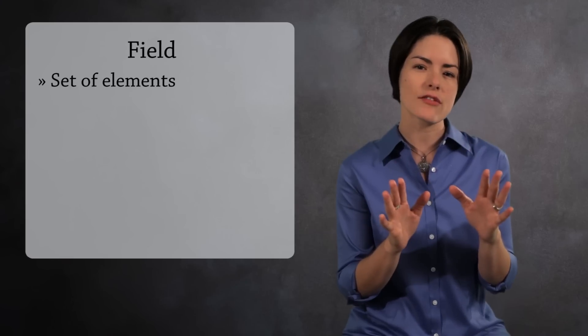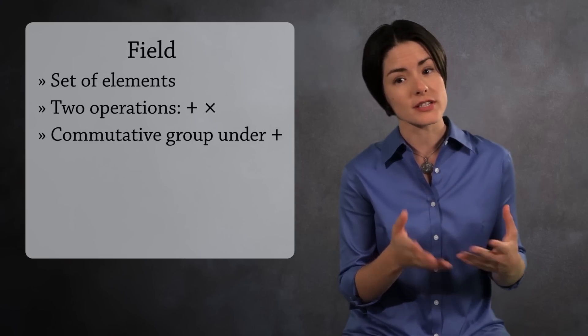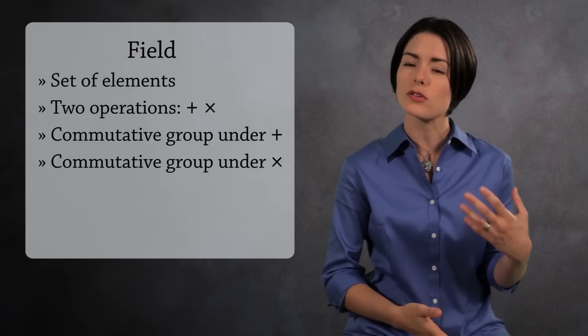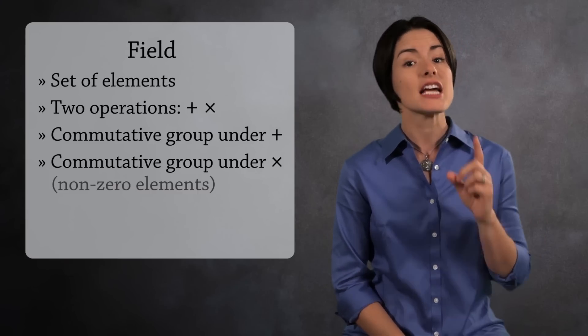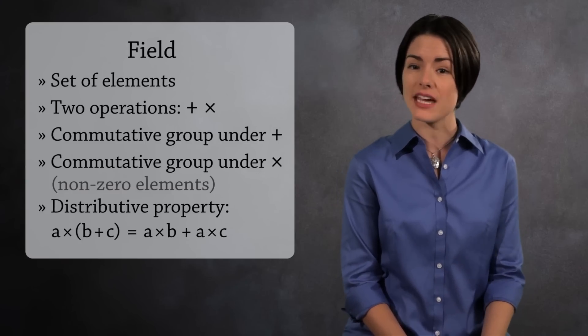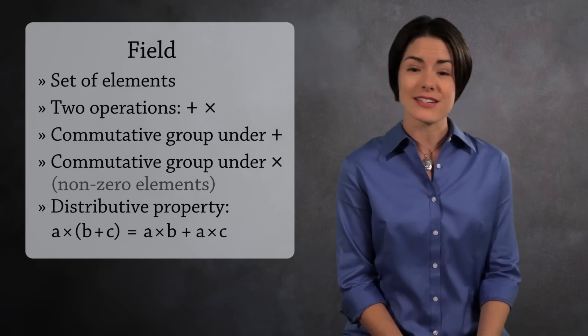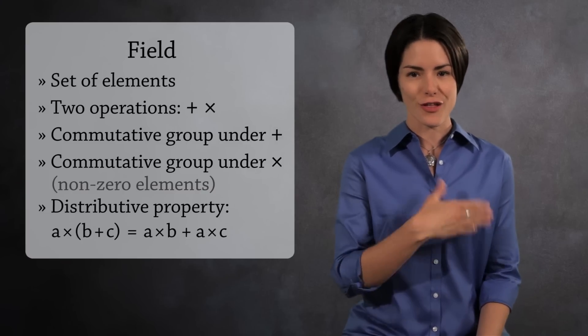A field is a set of elements with two operations, addition and multiplication. It's a commutative group under addition, and it's a commutative group under multiplication if you omit zero, because you can't divide by zero. And finally, addition and multiplication are connected through the familiar distributive rule. So ladies and gentlemen, I give you the field.